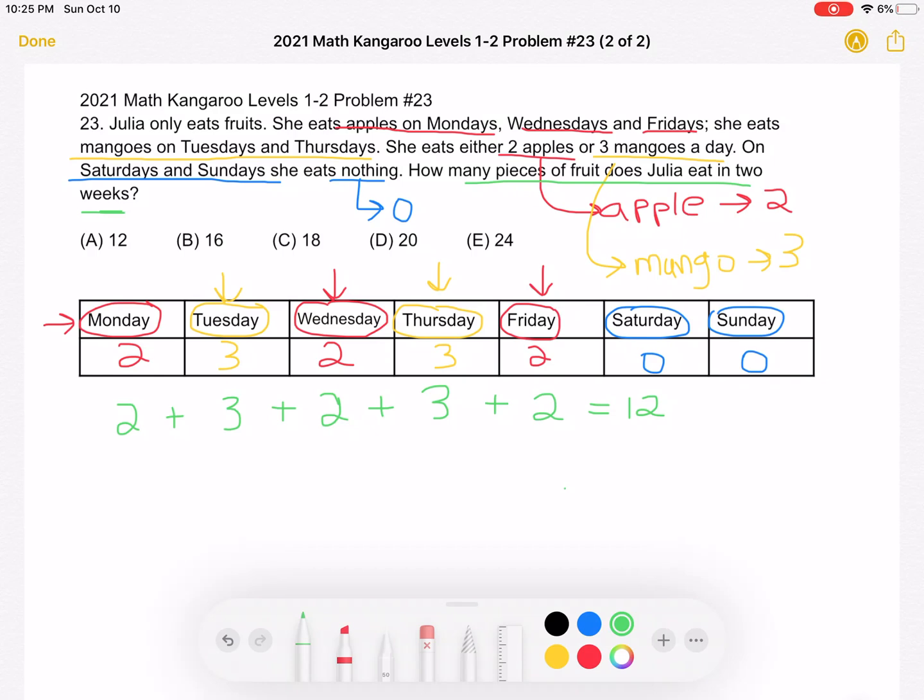And if that's how many pieces of fruit she eats in week one, in order to find for two weeks, we can do week one of 12 plus week two, 12, in order to get a total of 24 pieces of fruit for the two weeks, which is answer choice E.